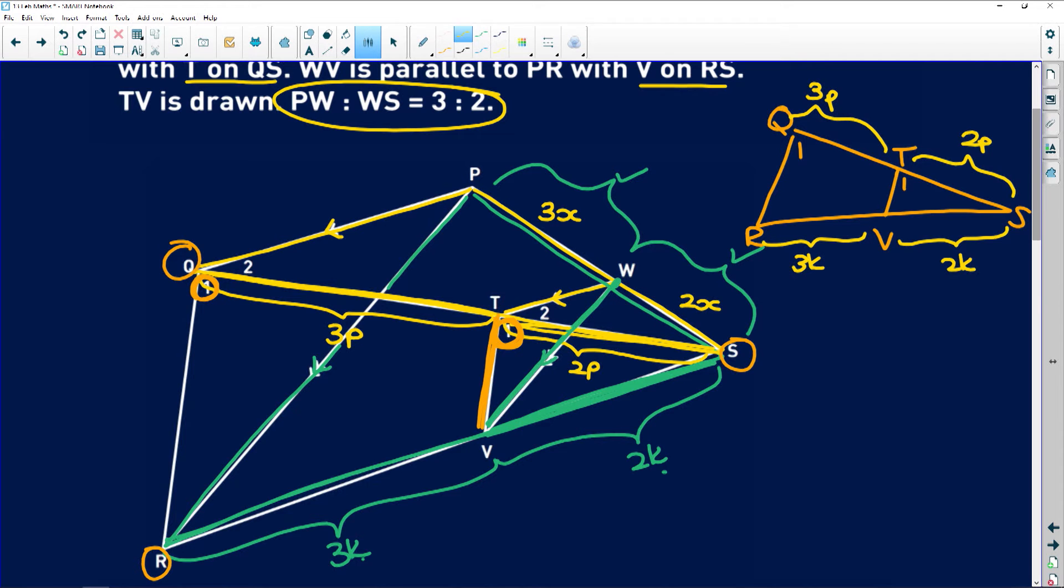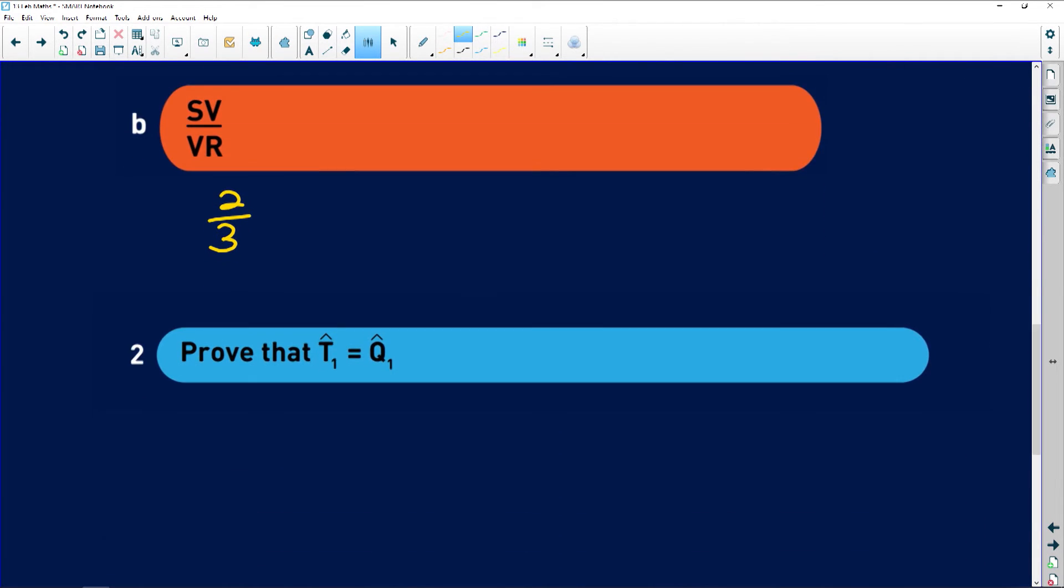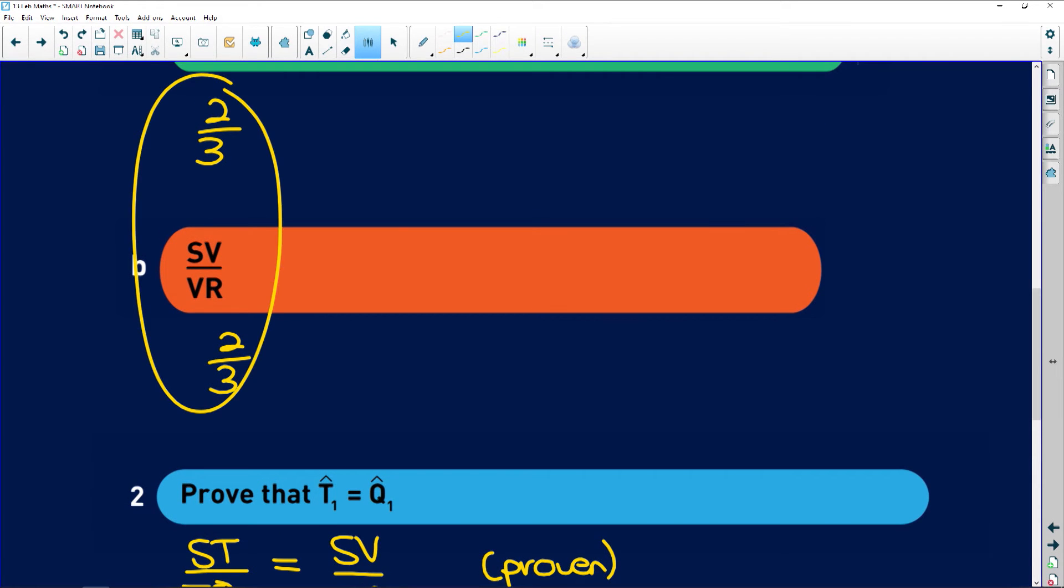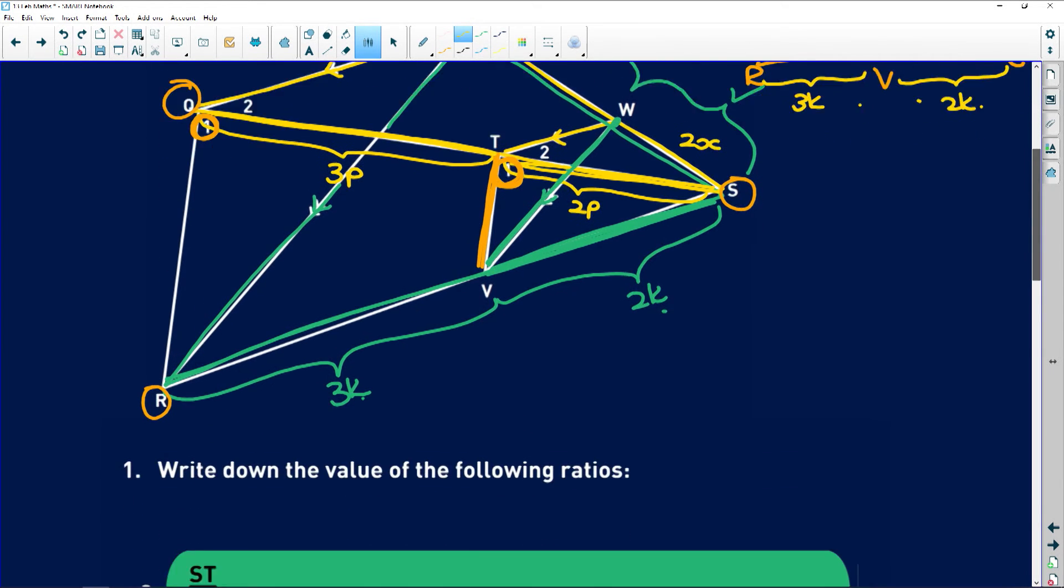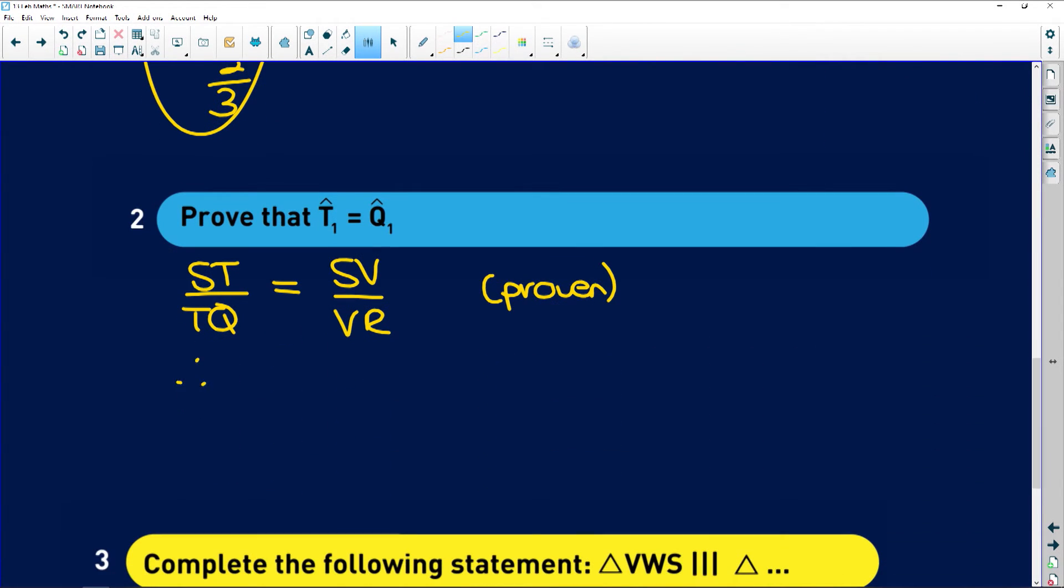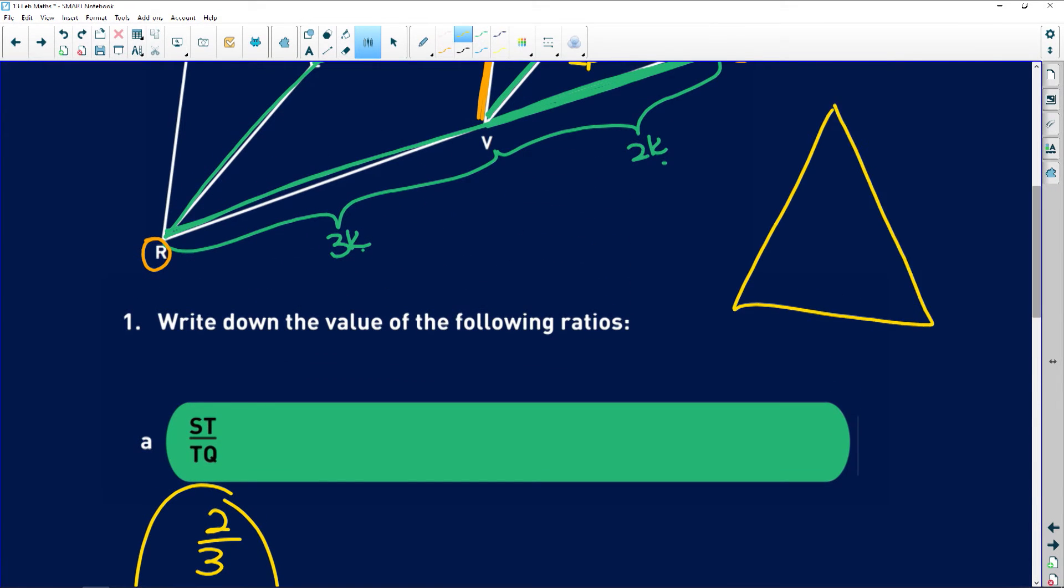So now if I can say ST to TQ is equal to SV to VR. We've proven that. We found that these two ratios are the same here. These ones in proportion. And what does that mean? Remember guys if I give you a triangle and I say I'm drawing this line here that is parallel to one side, it divides these sides in proportion. Now we're going backwards. We're saying that I've given you that the sides are in proportion and therefore you can make the conjecture that these two are parallel.